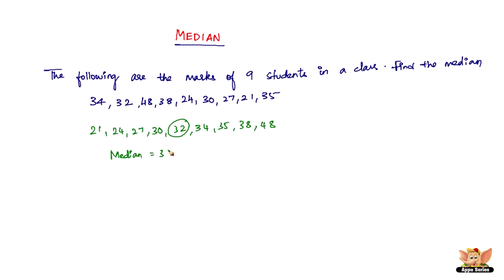The median of this distribution is 32. Pretty simple — it's exactly the middle one. So the number of values are n here, and n plus 1 divided by 2 gives the position. Here n equals 9, so the median will be equal to the (n+1)/2, which is the 5th value.